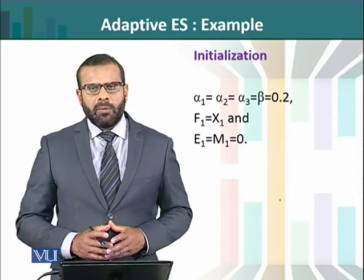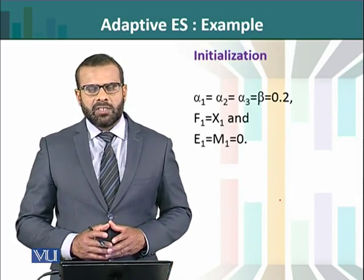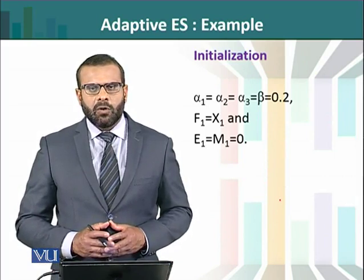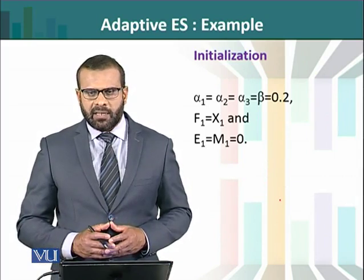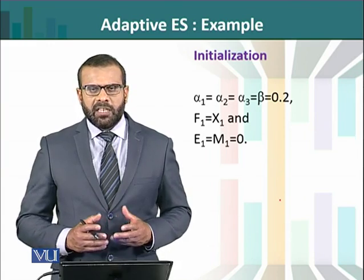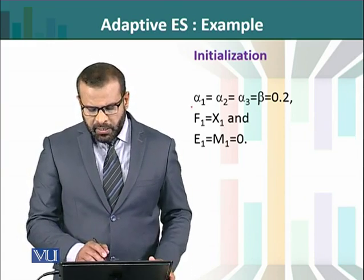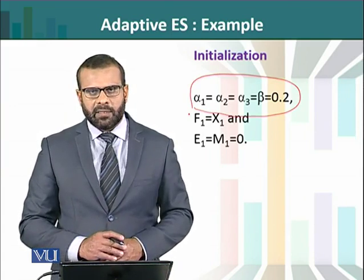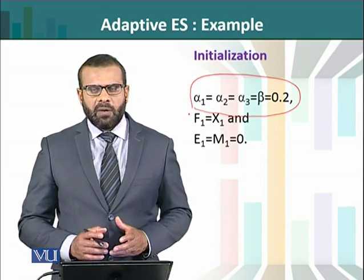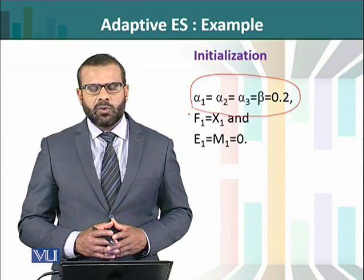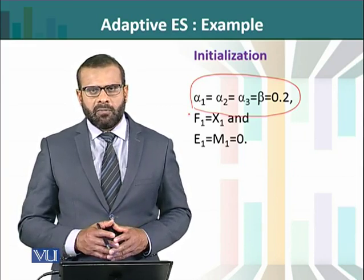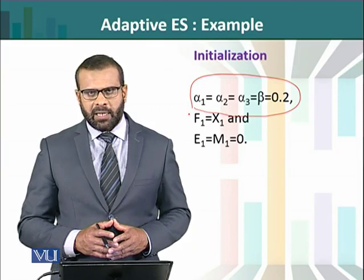In problems where a value depends on its past values, we need to initiate the process. In this particular example, the initialization is done at 0.2 — alpha 1, alpha 2, and alpha 3 are assumed. Generally, for the first 3 time points we assume some value, and based on that we calculate alpha for time points 4, 5, 6, and onwards.